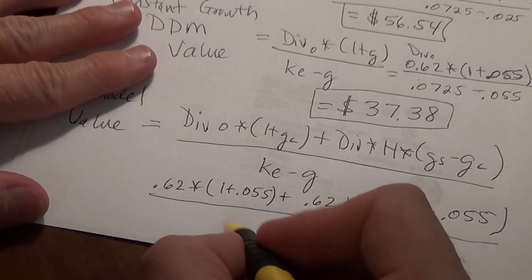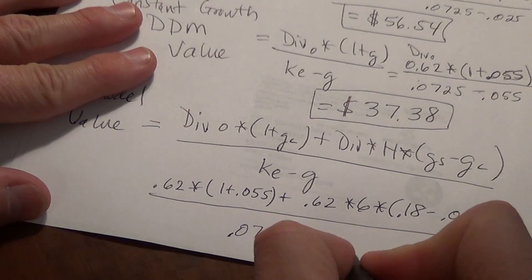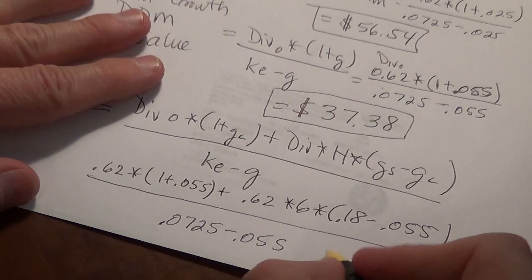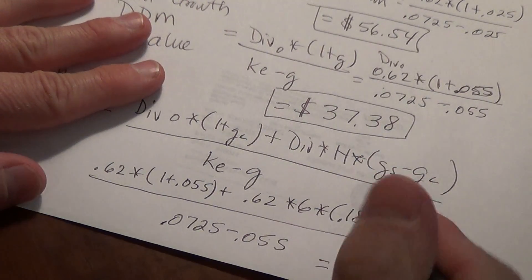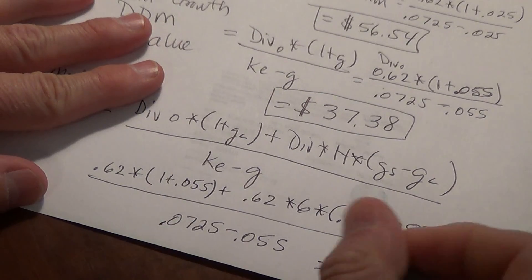Take all of that and we'll divide by 0.0725 minus 0.055. And we do that, we get a value of $63.95.